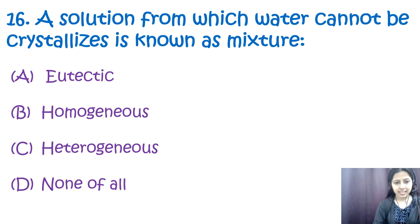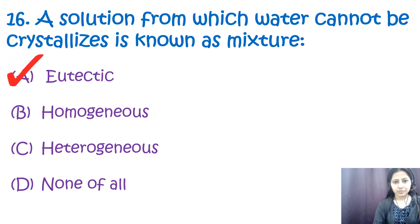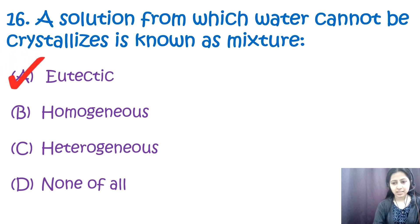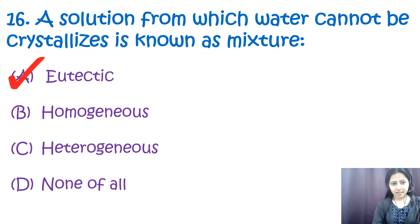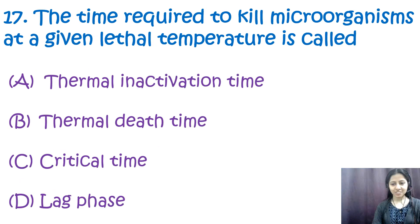Question number sixteen: a solution from which water cannot be crystallized is known as — options: a) eutectic mixture, b) homogeneous, c) heterogeneous, d) null. The correct option is a, eutectic mixture.